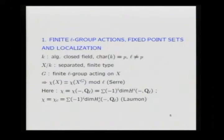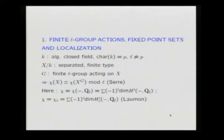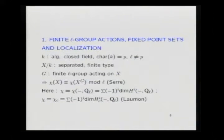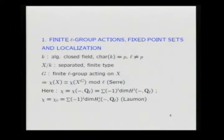Observe that we have a nice congruence between the Euler–Poincaré characteristic of X and the fixed point set X^G, namely a congruence modulo L. Chi is the alternating sum of the dimensions of the étale cohomology groups with values in Q_L. Here it's ordinary étale cohomology, but you could take cohomology with proper support and take the alternating sum and get exactly the same number, by a result of Laumon, proven around 1983. Grothendieck had proved it in the case of complex numbers; the general case was due to Laumon.